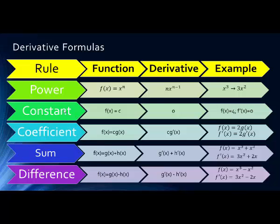The second rule is called the constant rule. If a function equals a constant, the derivative is always 0. For example, if f of x equals 4, then the derivative of f of x equals 0. We'll explain this in a bit more detail in just a second.